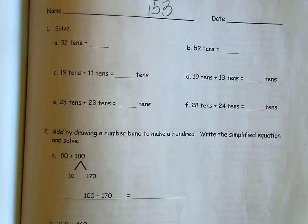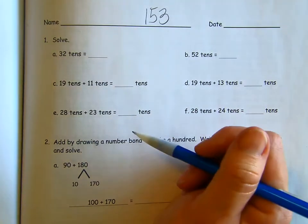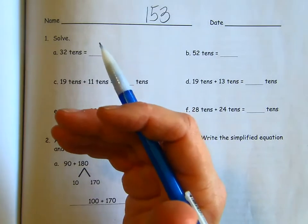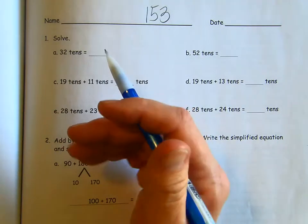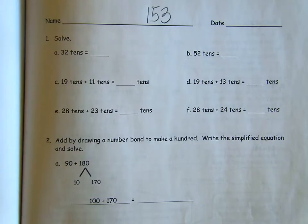Hey, everybody. Lesson 5, Homework. We're on page 153. And what we're doing is using a number bond to make the next 100, like we were making the next 10. Now we're using those same strategies to make the next 100.